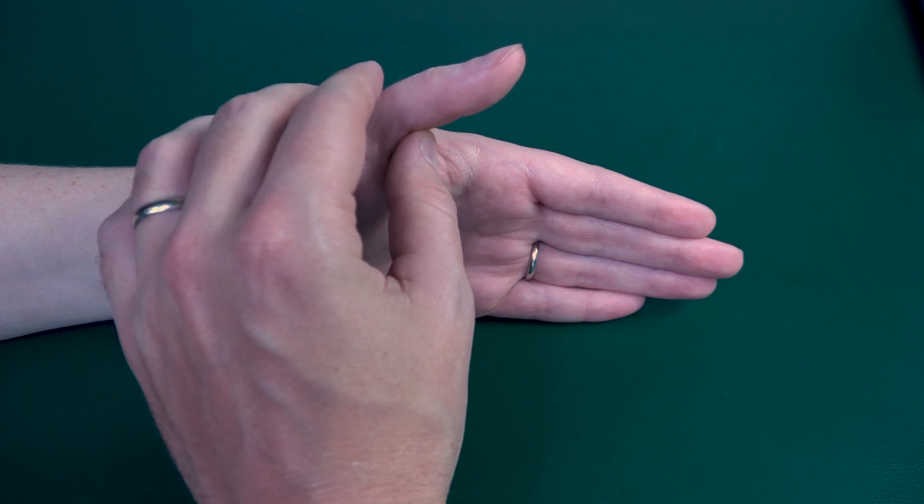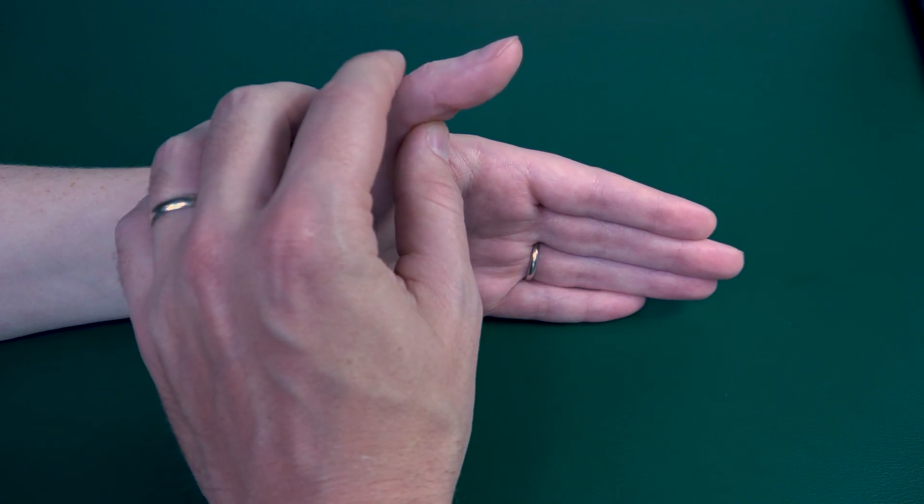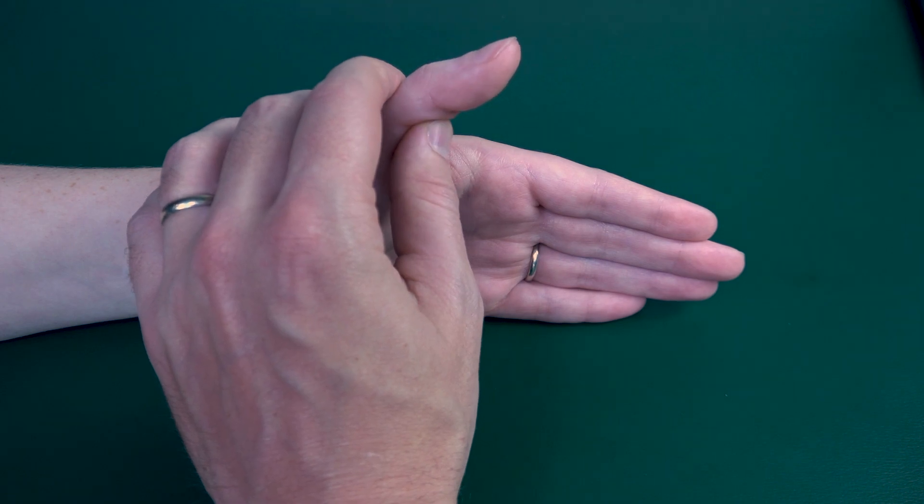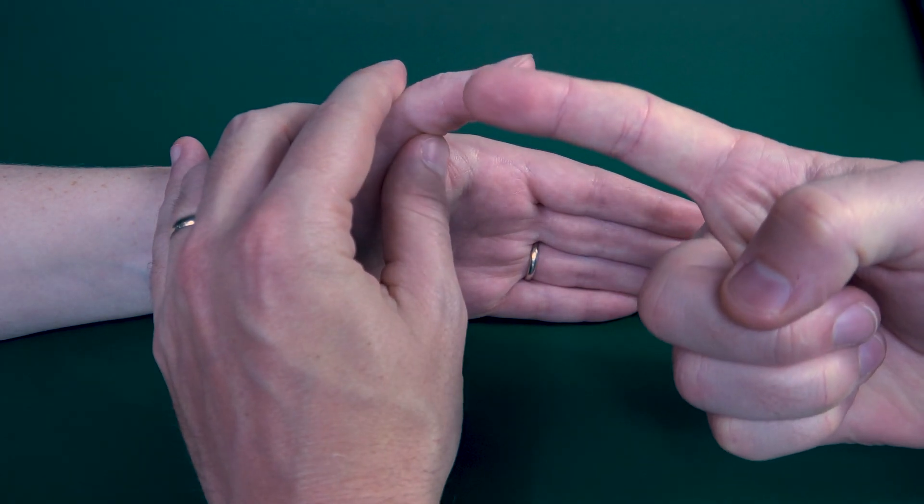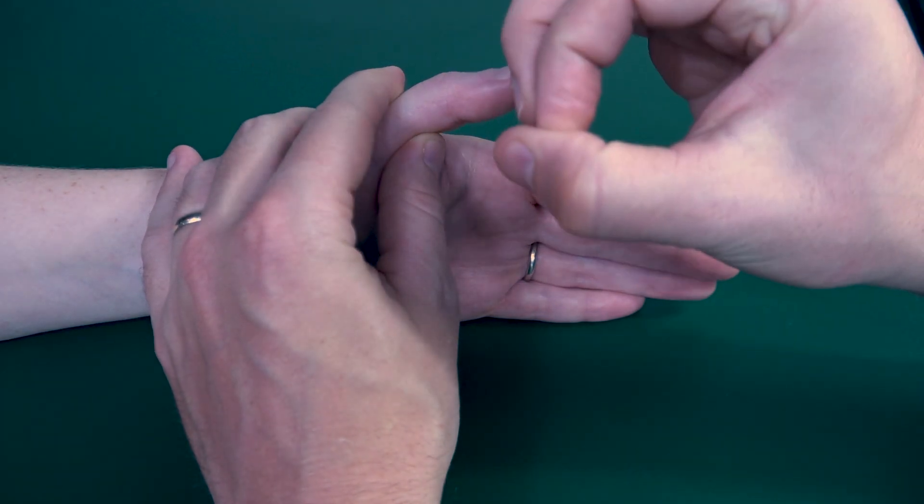So I want to see right here the tendon in the proximal phalanx to see if there's any movement. If I feel movement, that is a grade one. And if I do not feel any movement, it's totally stagnant. That is a grade zero.